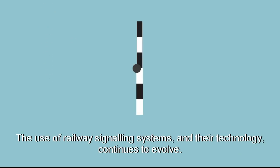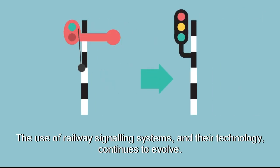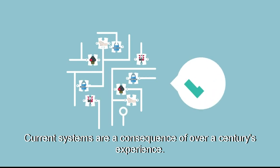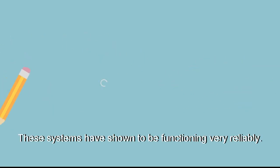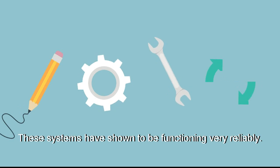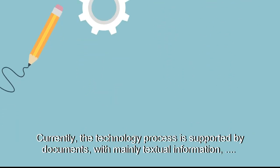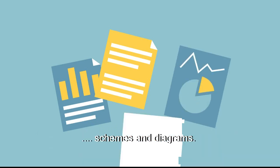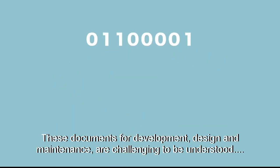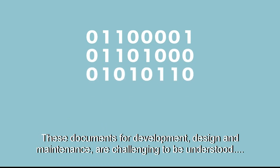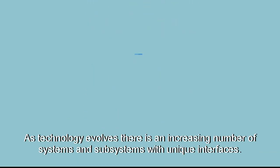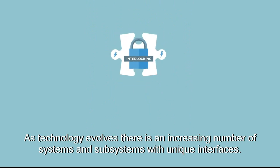The use of railway signaling systems and their technology continues to evolve. Current systems are a consequence of over a century's experience and have shown to be functioning very reliably. Currently, the technology process is supported by documents with mainly textual information, schemes and diagrams. These documents for development, design and maintenance are challenging to be understood together with today's digital technology. As technology evolves, there is an increasing number of systems and subsystems with unique interfaces.